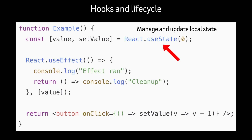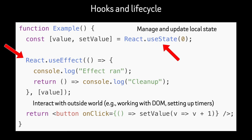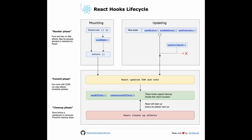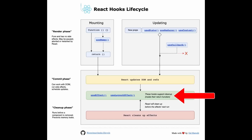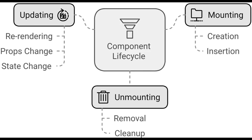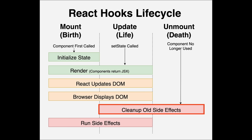useState gives the component memory, and useEffect ties side effects to the component's lifecycle. The effect runs after the component is committed to the DOM, and the cleanup runs before the effect is rerun or the component is removed. Conceptually, hooks map cleanly to lifecycle phases: rendering (the component function executes), commit (DOM updates are applied), effects (external systems are synchronized), and cleanup (subscriptions and resources are released). The rule that hooks must be called unconditionally and in the same order exists because React identifies hook state by call order, not by name. This design keeps the runtime simple and predictable, unifying state, lifecycle, and composition into a single coherent abstraction.